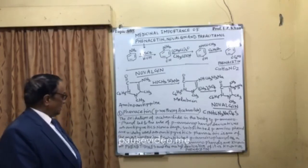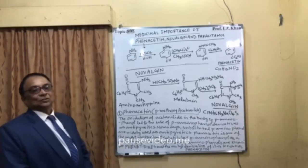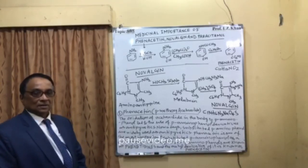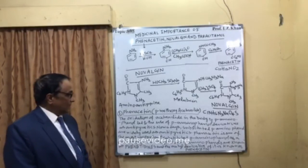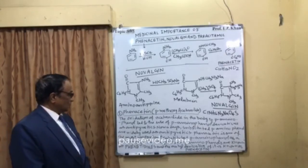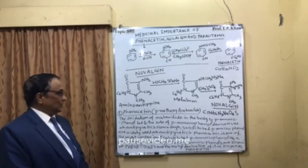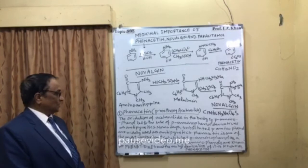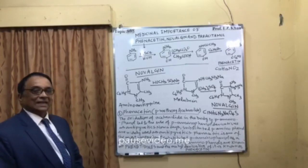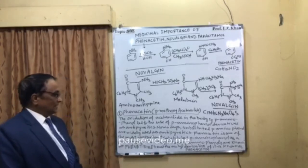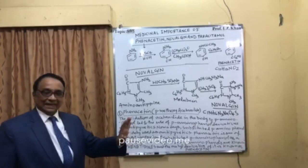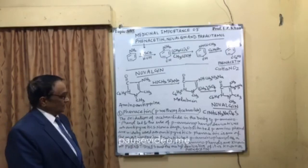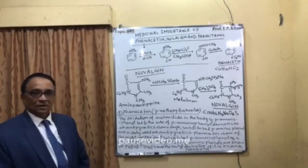Phenacetin is one of the most important substituted para-aminophenol derivatives. The ethyl ether of aminophenol is known as phenacetin. When phenacetin is subjected to acetylation, the acetyl derivative of phenacetidine is known as phenacetin — that is, phenacetin is the acetyl derivative of phenacetidine and a substituent of the para-aminophenol derivative.